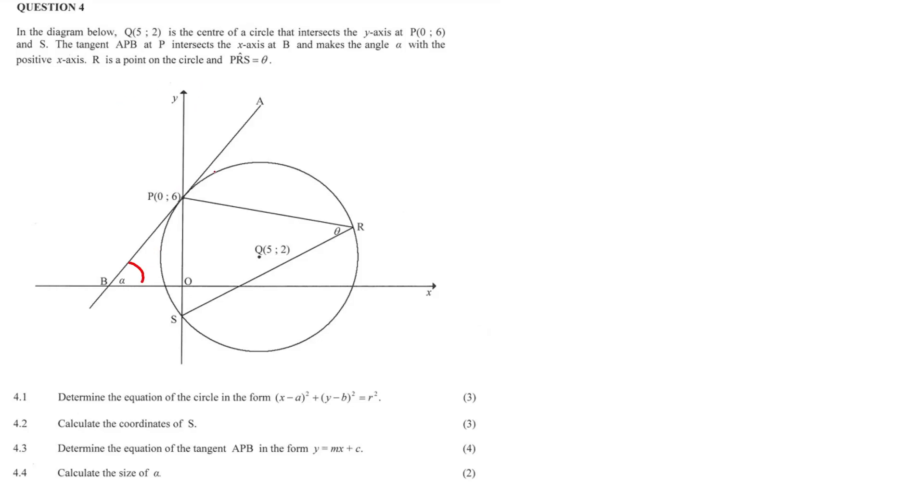So in other words, we have our angle here, alpha ABO. And R is a point in the circle and PRS equals theta. So R is a point in the circle and PRS equals theta. Okay, so we've got alpha, we've got theta, we know the coordinates of P and Q. Great. We've also got a circle here. This is a tangent, so tan-chord, definitely.